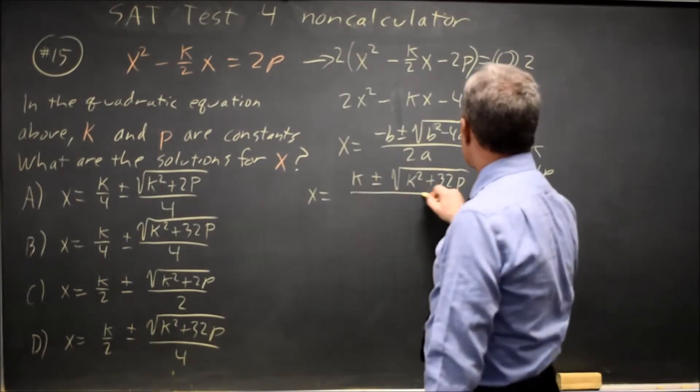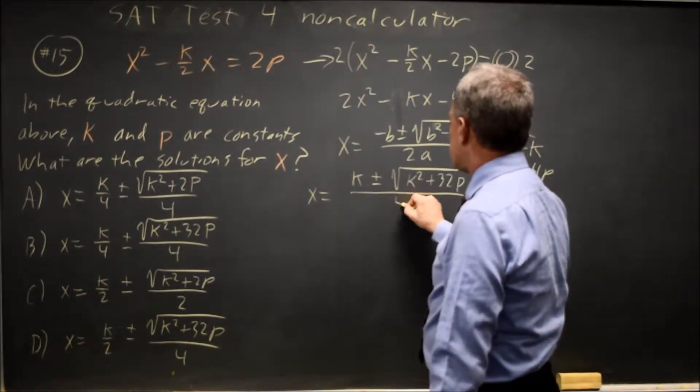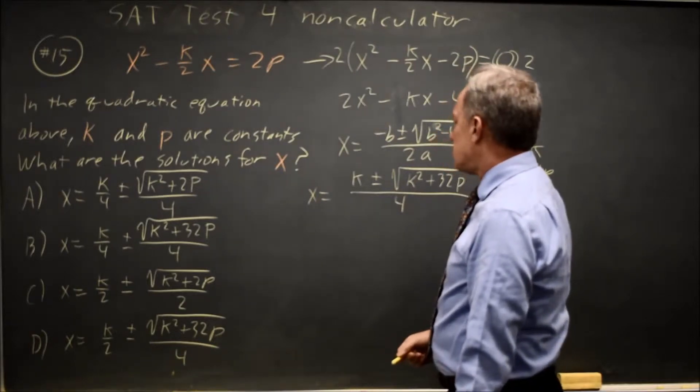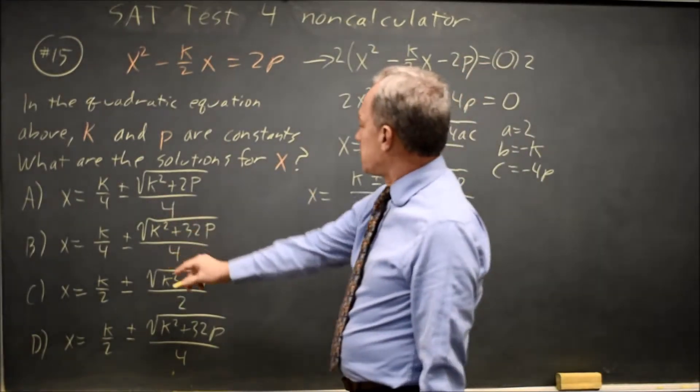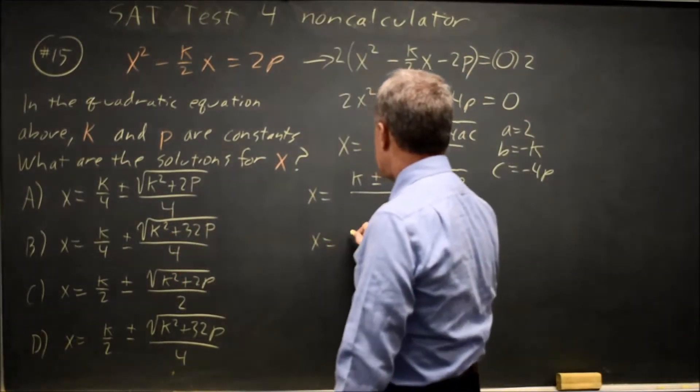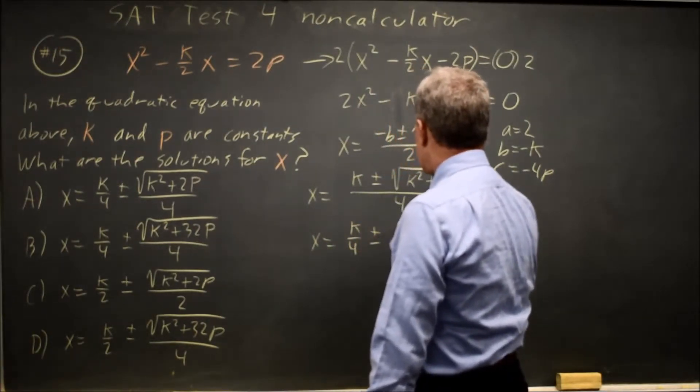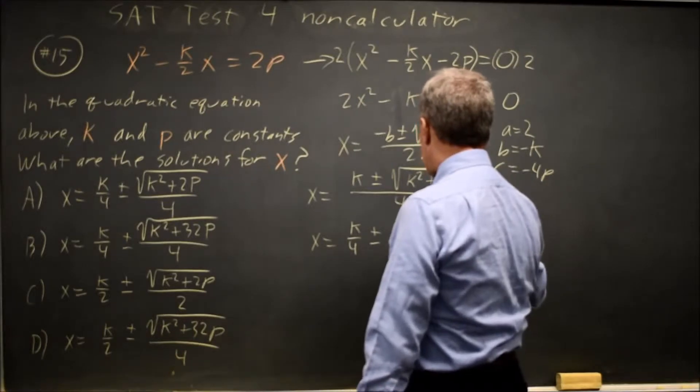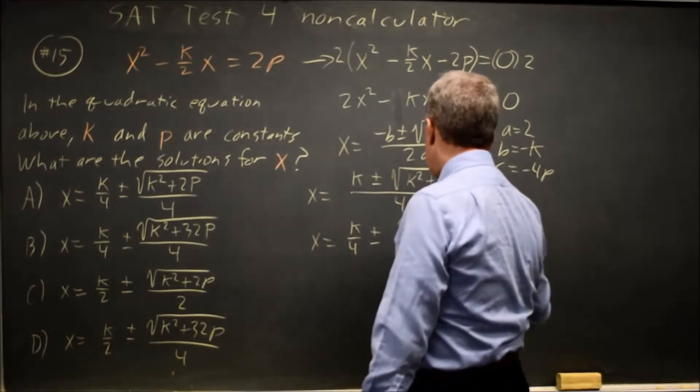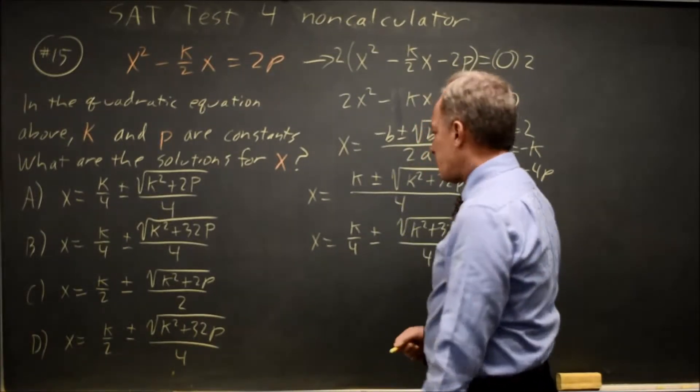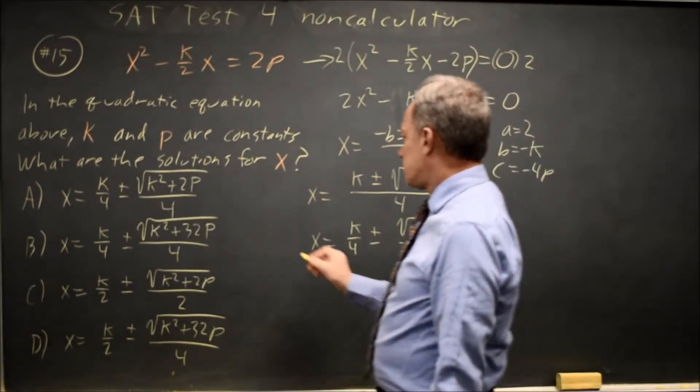over 2a, where a is 2 is over 4. Separating it like these answers are separated, I have x equals k over 4, and then plus or minus root k squared plus 32p over 4. That is choice B.